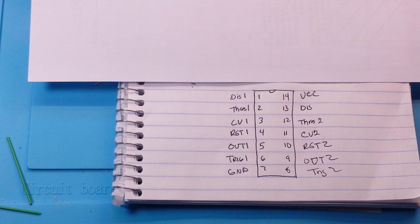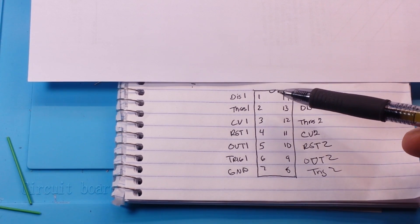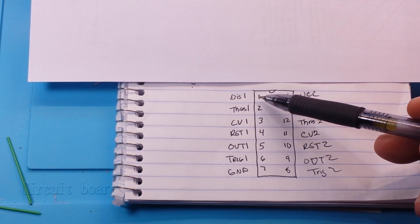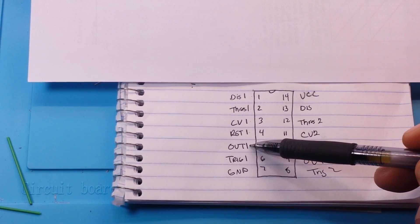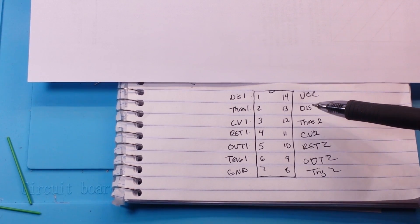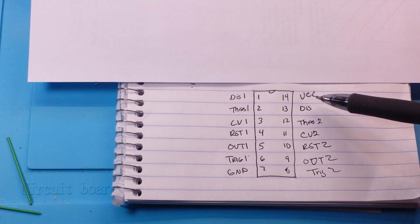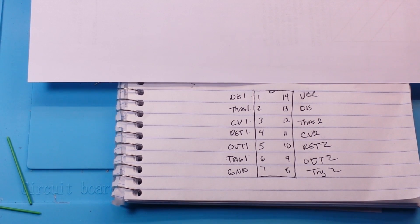The 556 timer is simply two 555s in one IC. If you split it down the middle, on the left side we have discharge one, threshold one, control voltage one, reset one, output one, trigger one, and a ground. Then on side two, we have our VCC, our discharge for the entire IC, threshold two, control voltage two, reset two, output two, and trigger two.